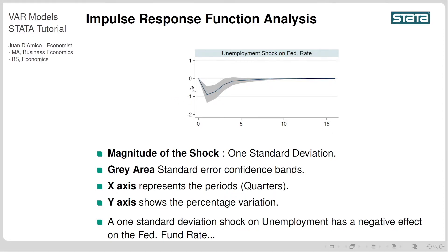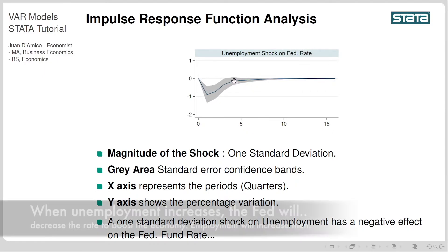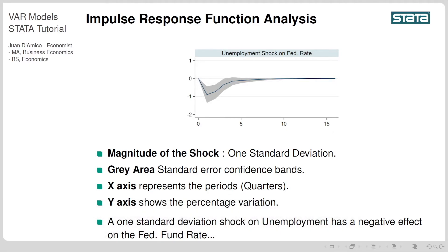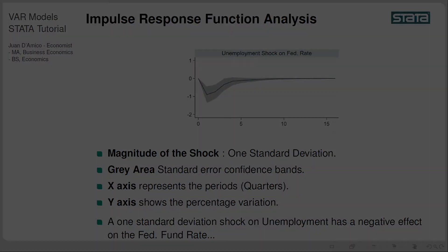The analysis here is: this is an unemployment shock — unemployment increases — and the fed rate responds by decreasing the rate. When unemployment is increasing, the fed wants to decrease the rate to try to activate the economy again. By decreasing the rate, we try to stimulate the economy. That's the intuition behind impulse response function analysis: how variables in your model respond to a shock on the rest of the variables.